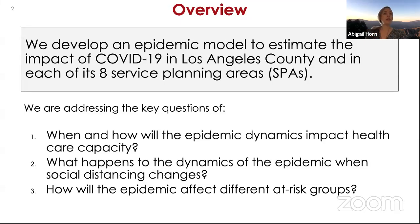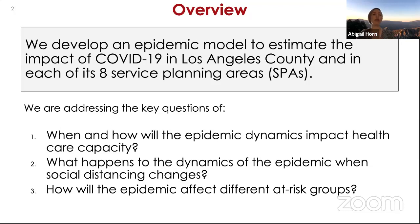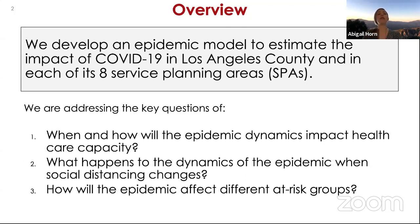The main questions guiding this work are: on the highest level, predicting epidemiological dynamics — when and how will the epidemic spread such that healthcare capacity is impacted, and how can the health department plan for that. Second, what will happen to epidemic dynamics when social distancing changes, incorporating time-varying parameters. Third, how will the epidemic affect different at-risk groups.